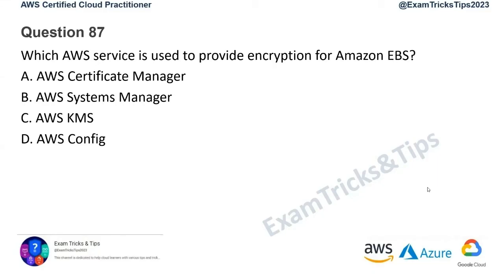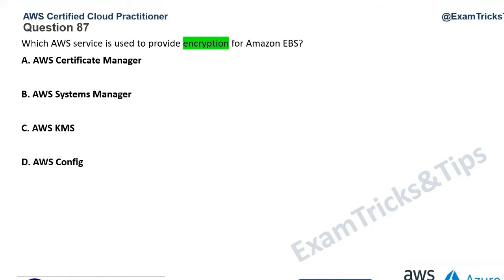Question 87: which AWS service is used to provide encryption for Amazon EBS? Read the question and mark your keyword. The keyword here is encryption — we need a service for doing encryption. Let's use elimination techniques to rule out the wrong answers and get to the correct answer.